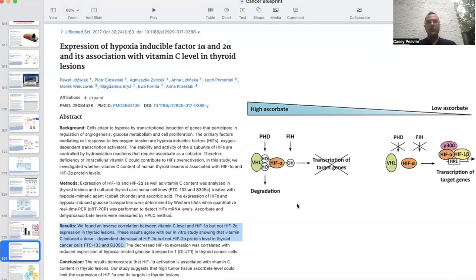So this is interesting. This is talking about how in thyroid cancer, there's an inverse relationship between the amount of ascorbic acid or vitamin C present in the cancer cells and the amount of HIF-1 that is either stabilized or destabilized. So as it says here, we found an inverse correlation between vitamin C level and HIF-1 alpha, but not HIF-2 alpha expression in thyroid lesions.